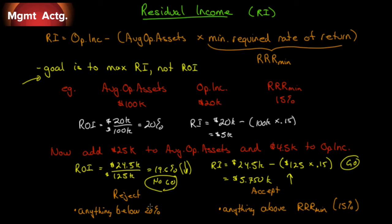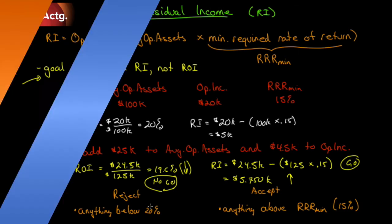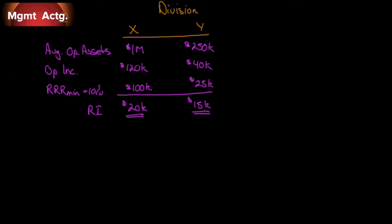However, residual income is not without its problems. Consider two divisions: Division X has average operating assets of $1,000,000 and operating income of $120,000; Division Y has $250,000 in assets and $40,000 in operating income. With a 10% required rate of return, Division X needs $100,000 minimum — so residual income is $20,000. Division Y needs $25,000 minimum — so residual income is $15,000. Division X appears to have higher residual income.